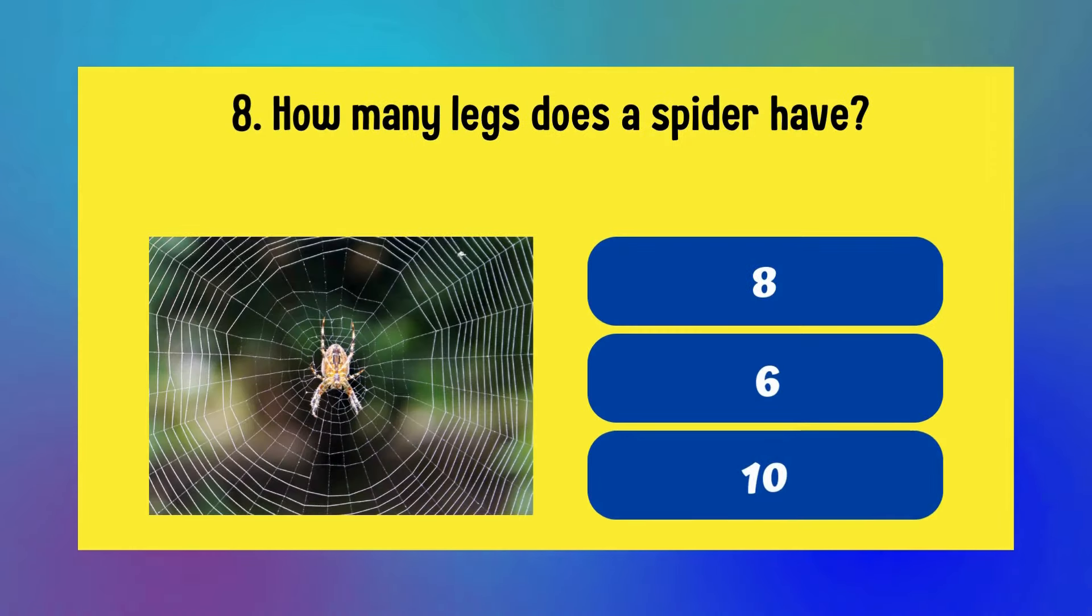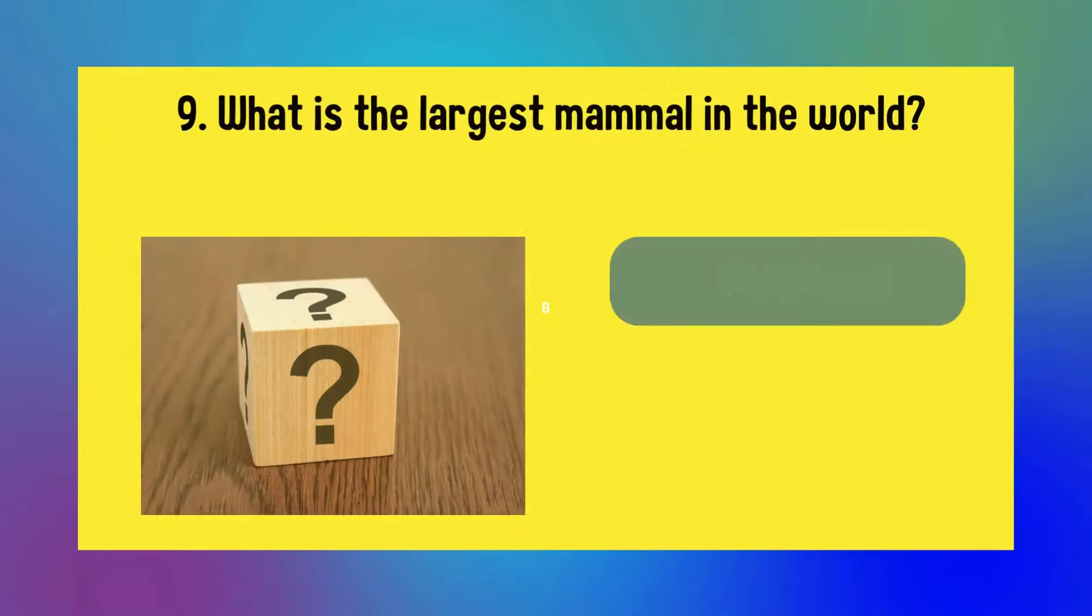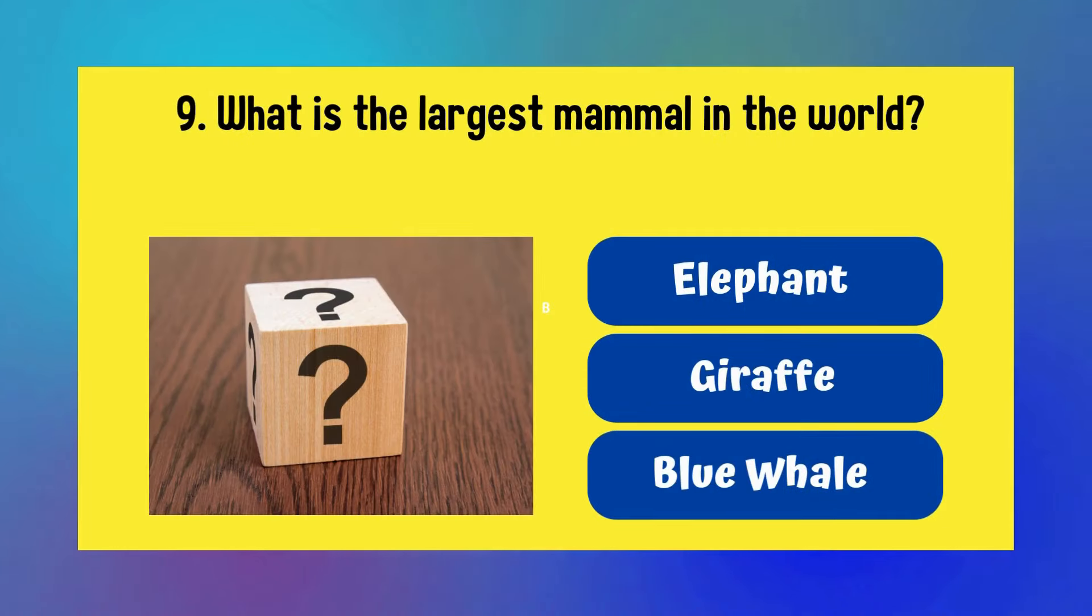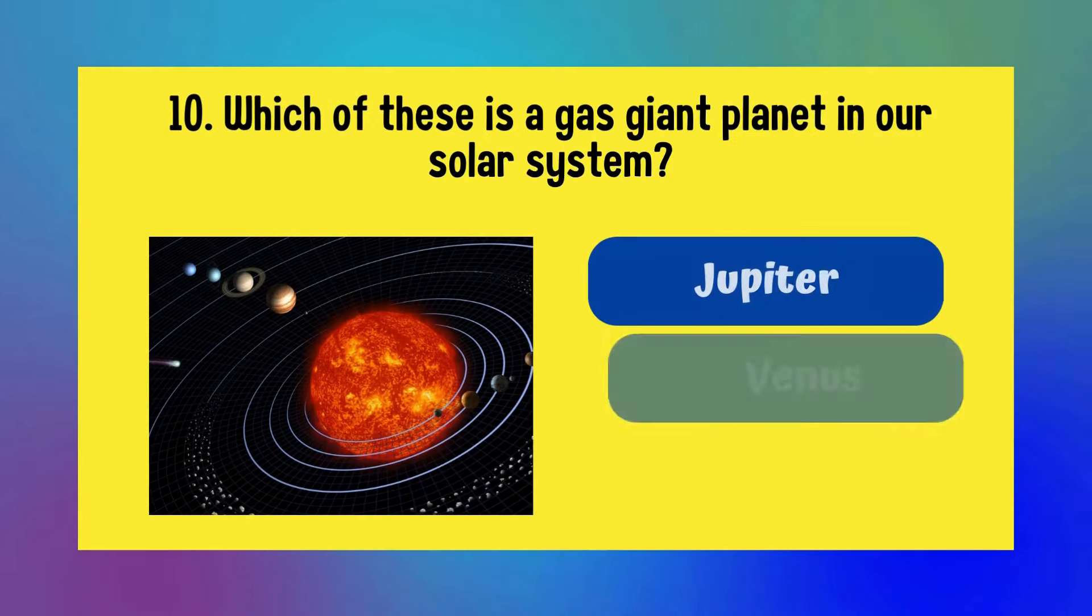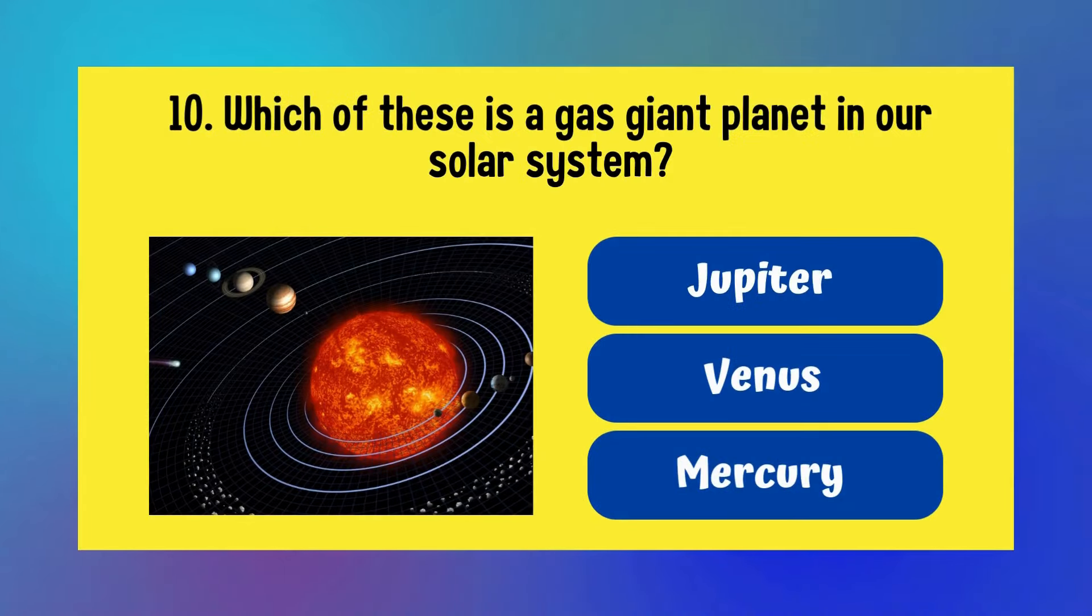Which of these is not a primary color? Red, green, or blue? Answer is green. How many legs does a spider have? Eight, six, or ten? Answer is eight. What is the largest mammal in the world? Elephant, giraffe, or blue whale? Answer is blue whale.